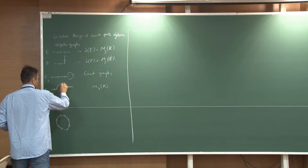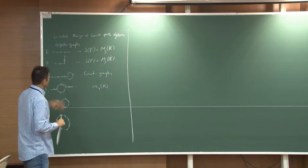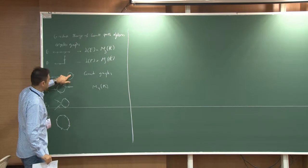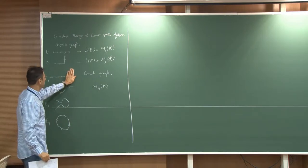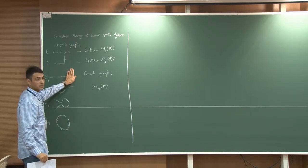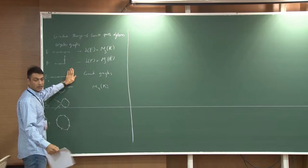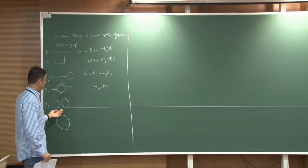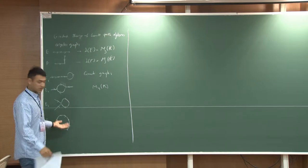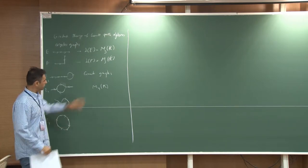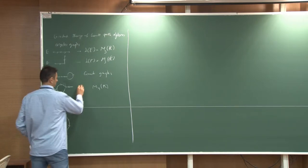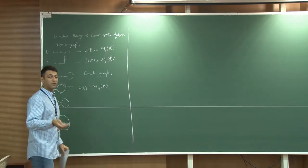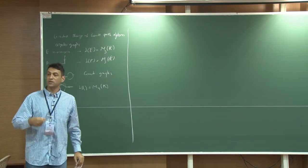Let's do this one. Again, you remove one edge from the cycle. Here you have only one edge, so remove that. You end up with an acyclic graph, and then count all the paths — which is again M4. Do this here: M4. This could be an exercise. Again, M4. So the Leavitt Path Algebras associated with these graphs are all four-by-four matrices over K.